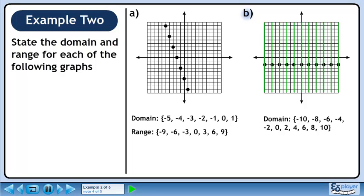In part B, the green bars indicate the x values used by the points. The domain is from minus 10 to 10, going up by 2s. The blue bars indicate the y values used. Only one y value is used, so the list for our range contains only one element, minus 2.